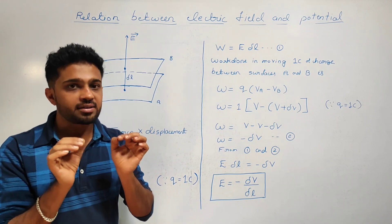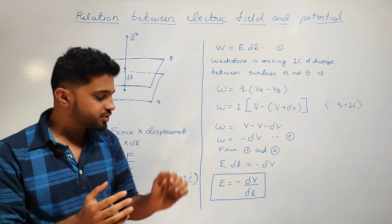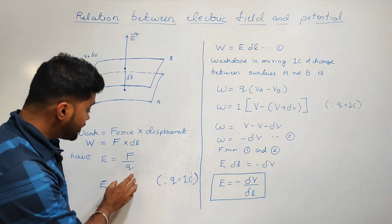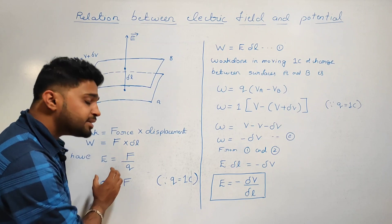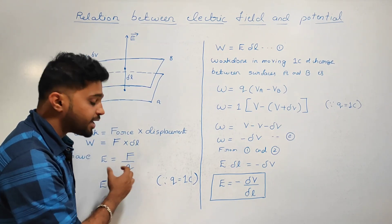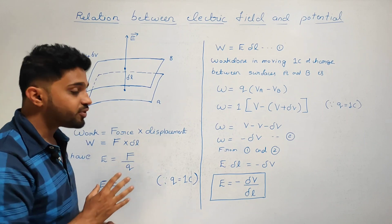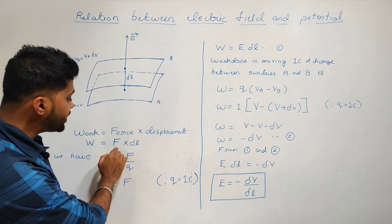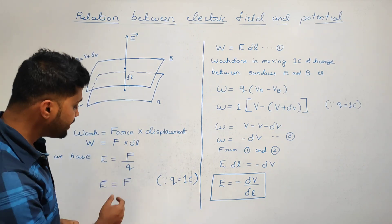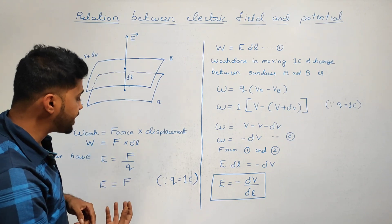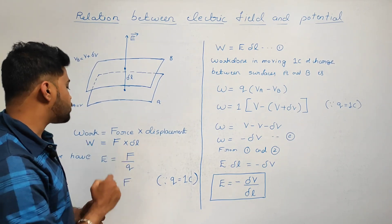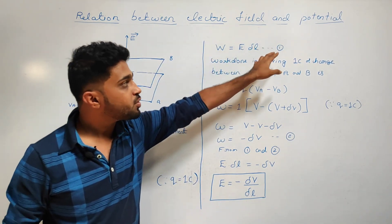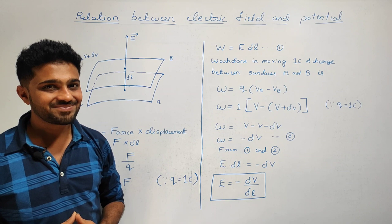This is the unit positive charge, 1 C of charge. The electric field E equals electrostatic force F. So substituting, W is equal to E into delta L. That is equation number 1.